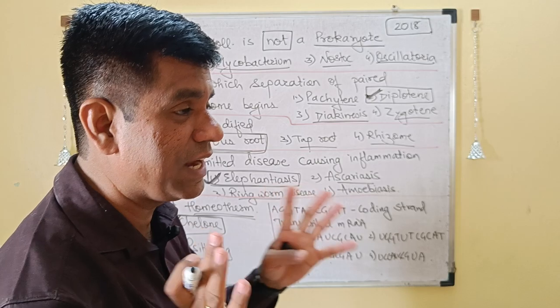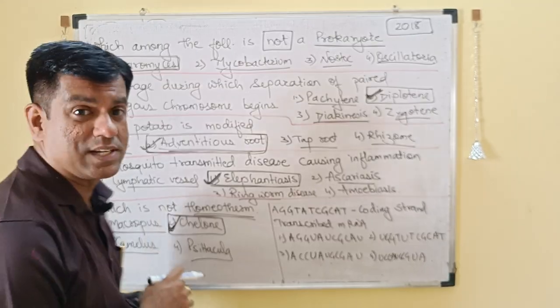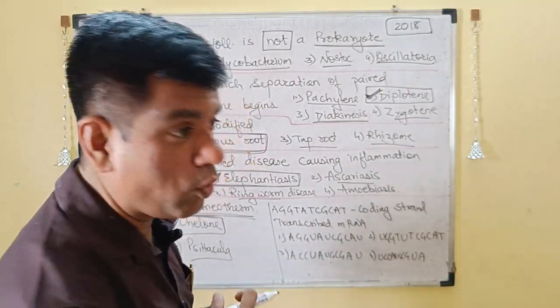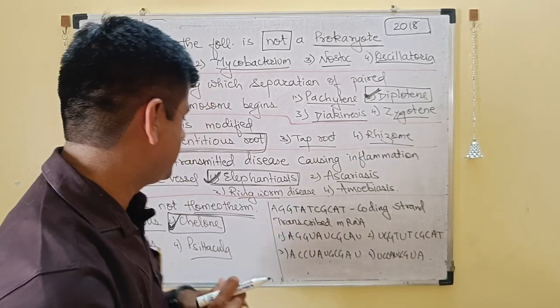Remember, only your mammals and your birds are homeotherms — that is warm-blooded. The counterparts are cold-blooded, that is your poikilotherms.